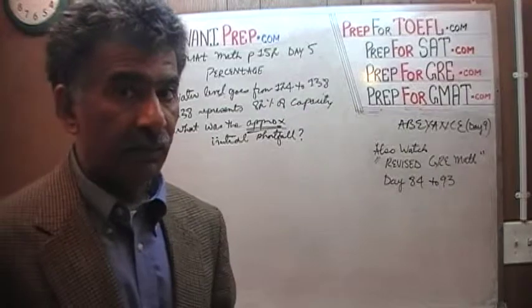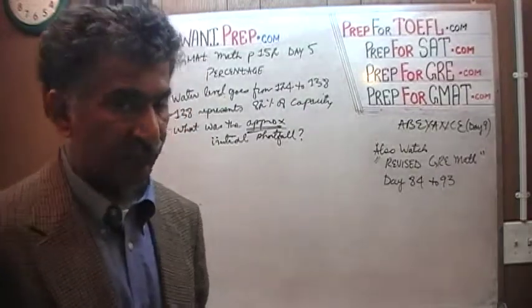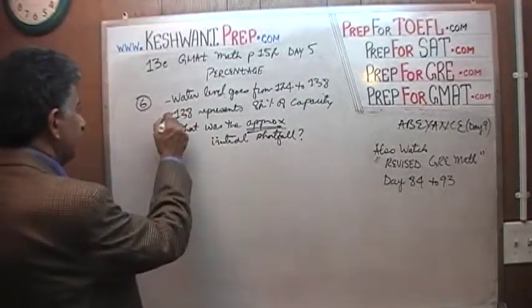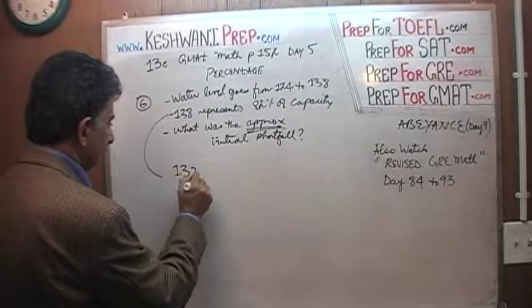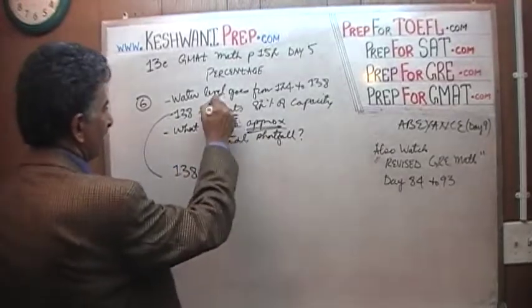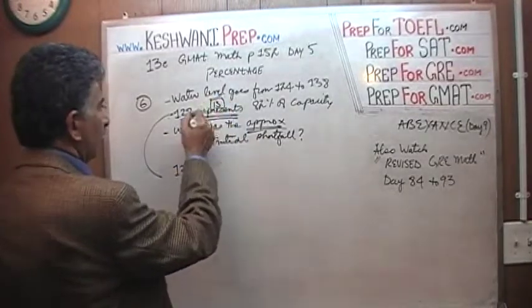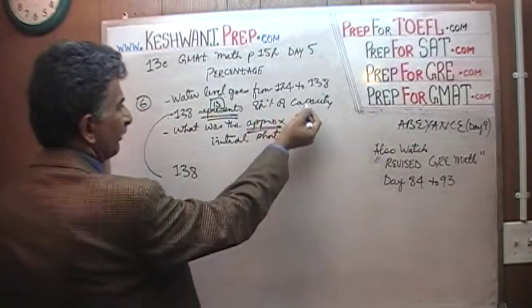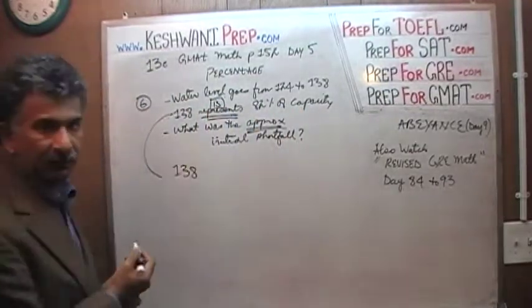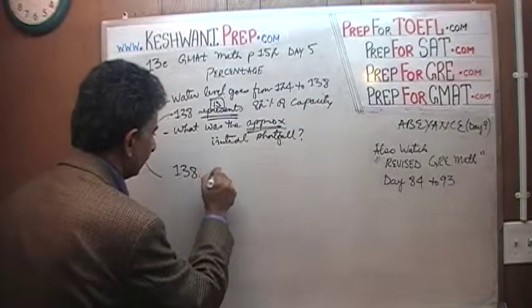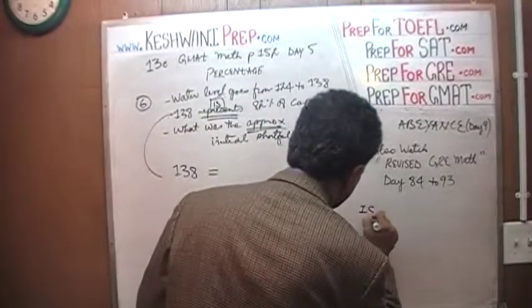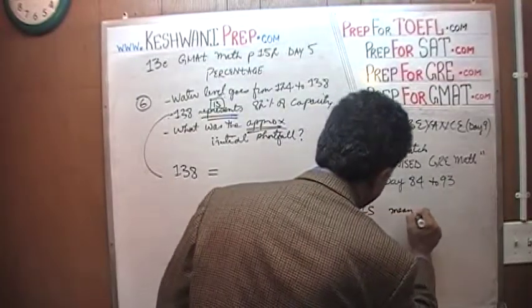So the very first thing we have to figure out is what exactly is the capacity of the reservoir. We know that 138, when they say represents, represents the same as saying is, 138 is 82% of the capacity. What does is mean? Is means equal.